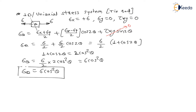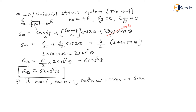To find the maximum value of sigma theta, we substitute different values of theta. When theta = 0°, cos0 = 1, so cos²0 = 1, which is the maximum value of cosine. Therefore, sigma max = sigma · cos²0° = sigma, at theta = 0°.